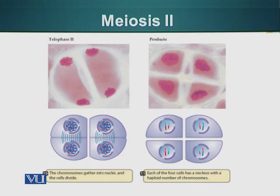In telophase of meiosis 2, it is similar — the chromosomes start to decondense again and the nuclear envelope starts to form. Ultimately, there will be cytokinesis and now from one cell, we have made four cells.